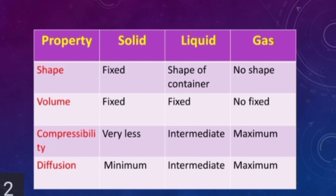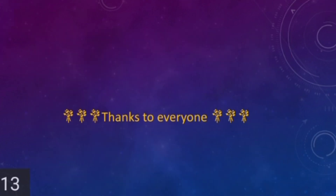Here is the tabular form of properties of matter. The properties are shape, volume, compressibility, and diffusion. Solids have fixed shape, fixed volume, very less compressibility, and minimum diffusion. Liquids have the shape of the container, fixed volume, intermediate compressibility, and intermediate diffusion. Gases have no fixed shape, no fixed volume, maximum compressibility, and maximum diffusion. Thanks to everyone.